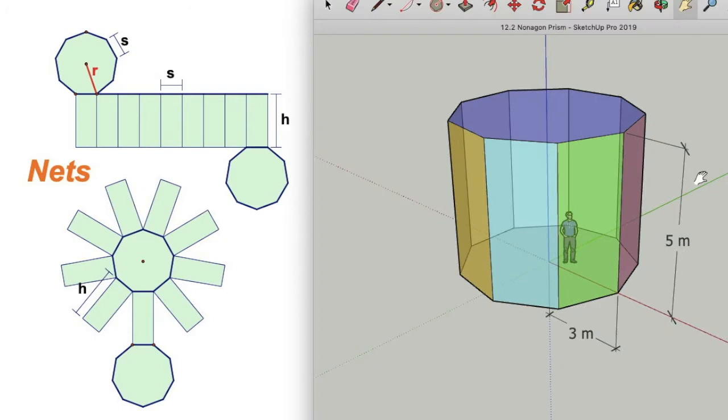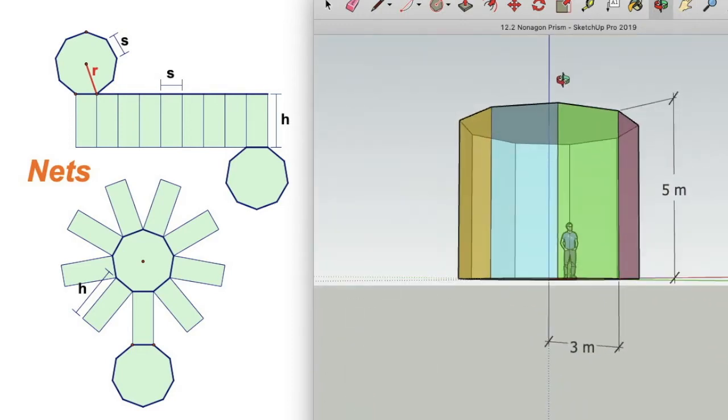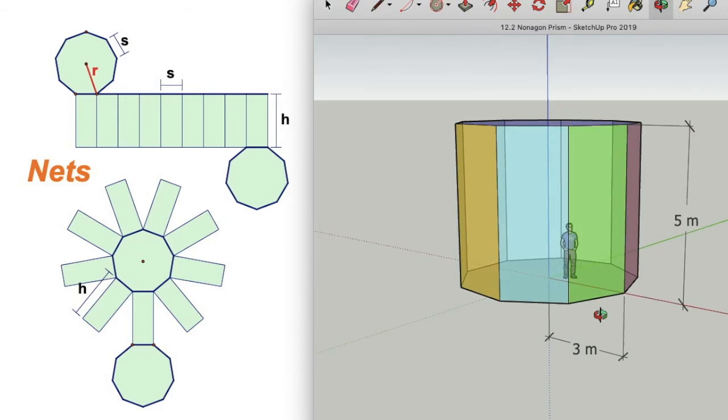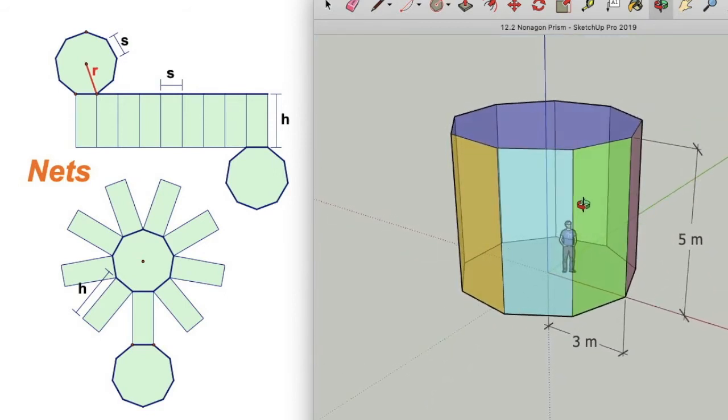Now, just to be clear, I'm looking at this figure right here, and it has a height of 5, a radius of 3. And again, if I look at it, I've got a nonagon on the top, a nonagon on the bottom.